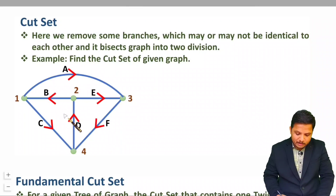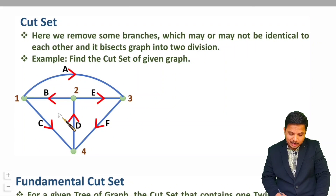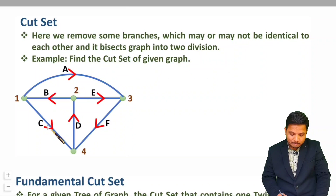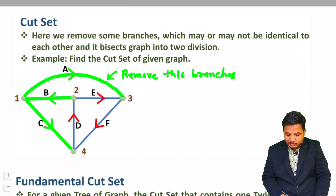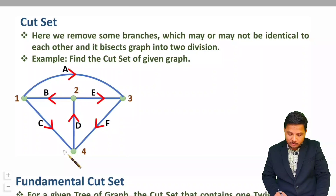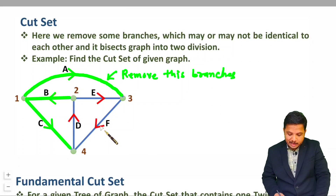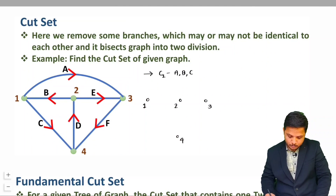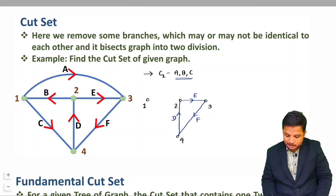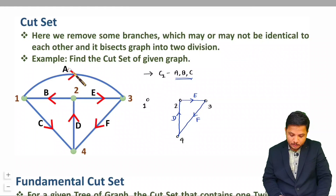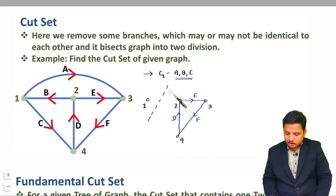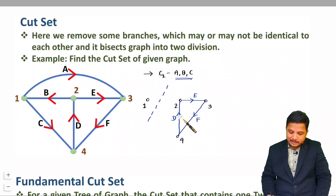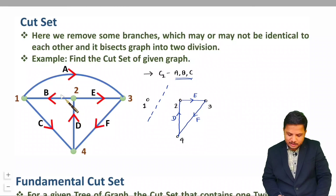Let me explain that with one example so it will be more clear. Here we have one graph. If you remove branch A, branch B, and branch C, then you will have node 1 as one part of the graph which will not be connected with the second part of the graph having links E, D, and F. So by removing branches A, B, and C, you can observe that node 1 is isolated from the rest of the graph.